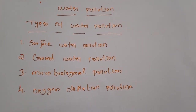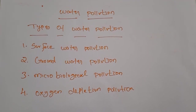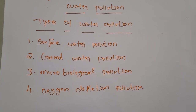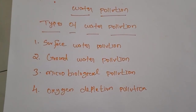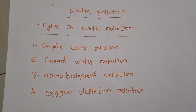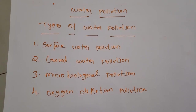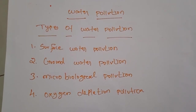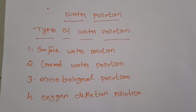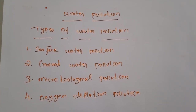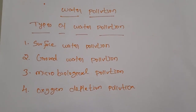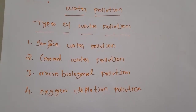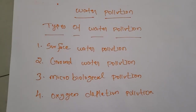Wherever water is found and it is polluted by human activities, it is considered a water pollutant. Surface water pollution includes natural water found on the earth's surface like rivers, lakes, lagoons, and oceans. Hazardous substances coming into contact with surface water — dissolving or mixing physically with the water — can be called surface water pollution.